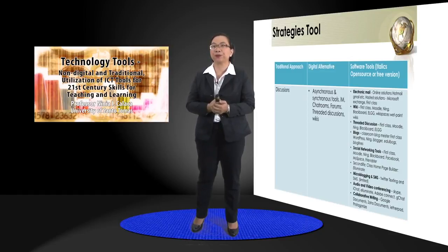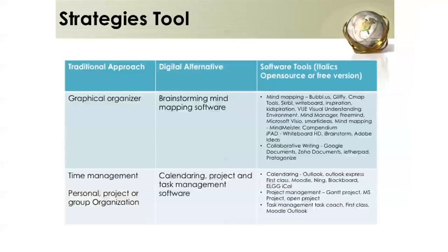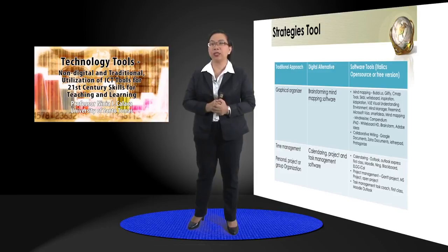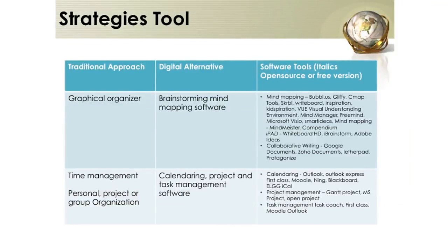If the activity is about graphical organizers, the digital alternative is brainstorming and mind mapping software such as Babolas, Gliffy, CmapTools, Whiteboard, Inspiration, Kidspiration, FreeMind, MindManager, Microsoft Visio, SmartIdeas, and Compendium. We can also use iBrainstorm, and for collaborative writing: Google Documents, Zoho Documents, or Protagonize. If the activity is about time management — personal, project, group, or organizational — the digital alternative is calendaring tools and project and task management software such as Outlook, Outlook Express, FirstClass, MS Project, OpenProject, or task management tools like Task Coach or MS Outlook.